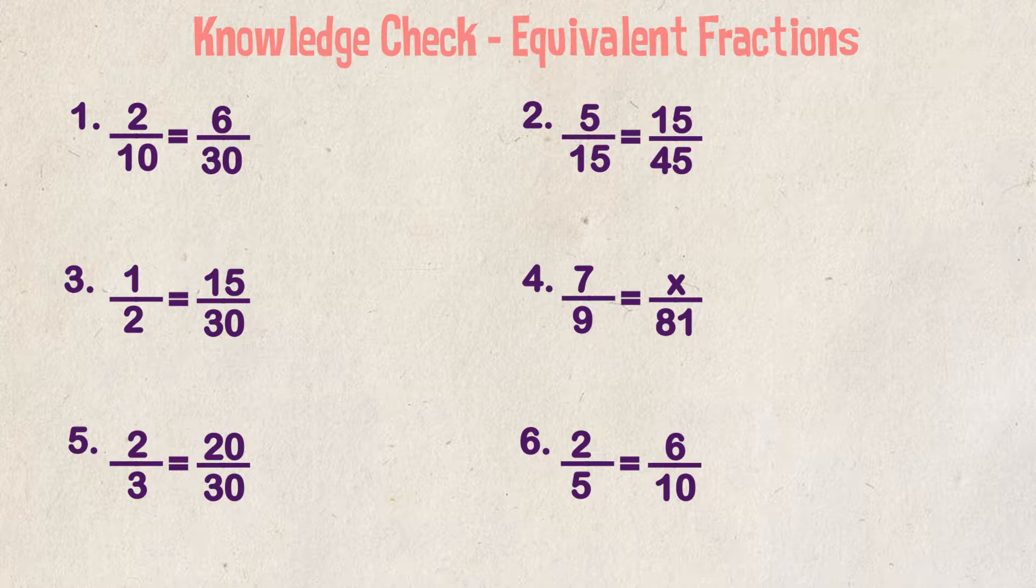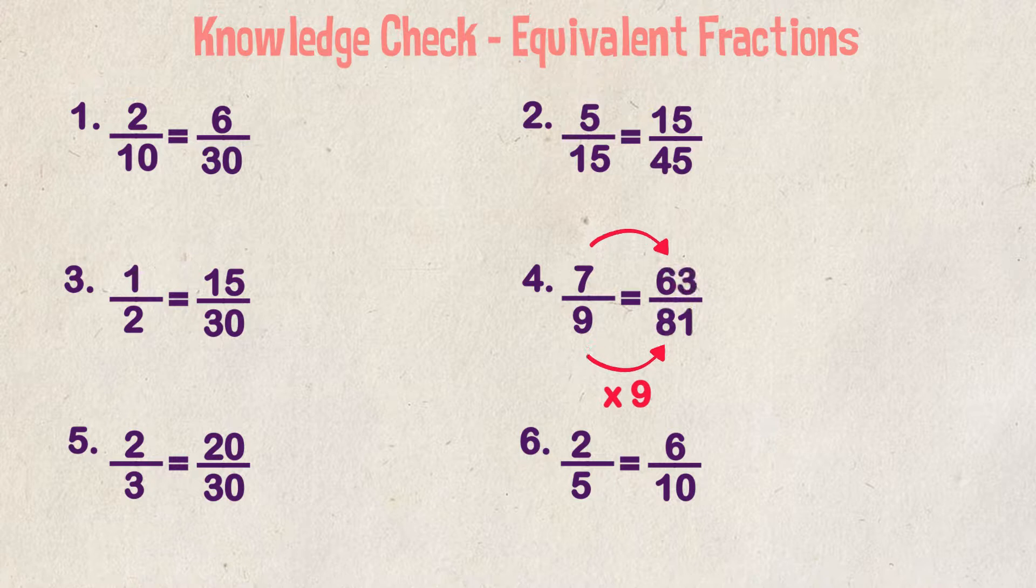Example four, 7 over 9 is equal to x over 81. We know that 9 goes into 81 a total of 9 times. If we multiply the denominator by 9, we do the same to the numerator of 7 and we get 63. The equivalent fraction is 63 over 81.